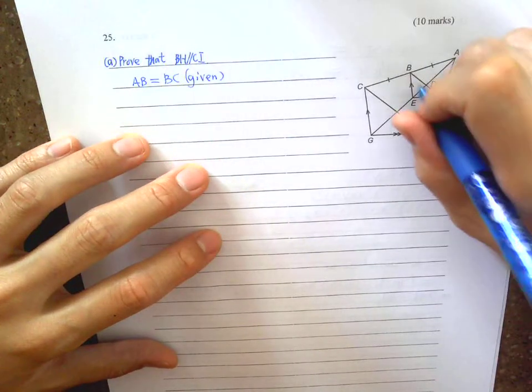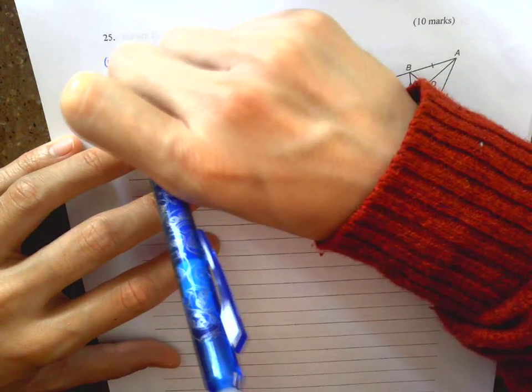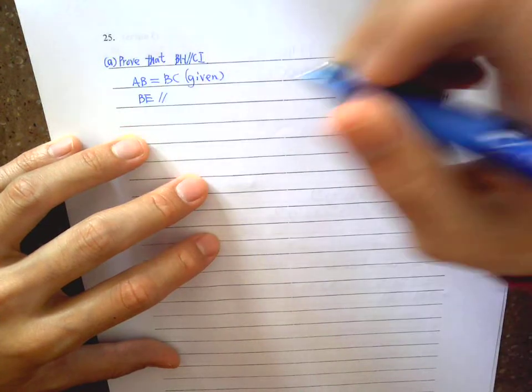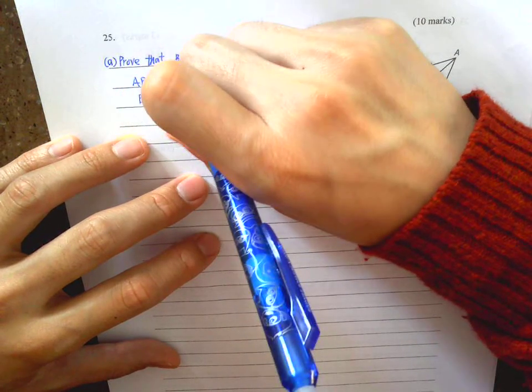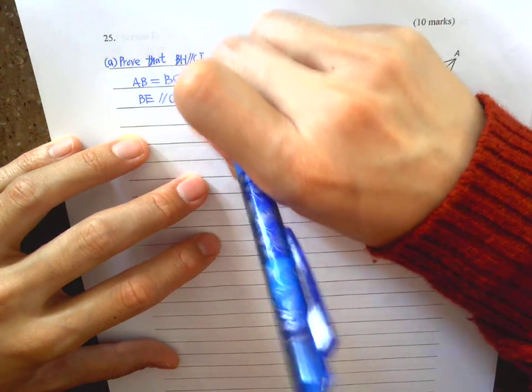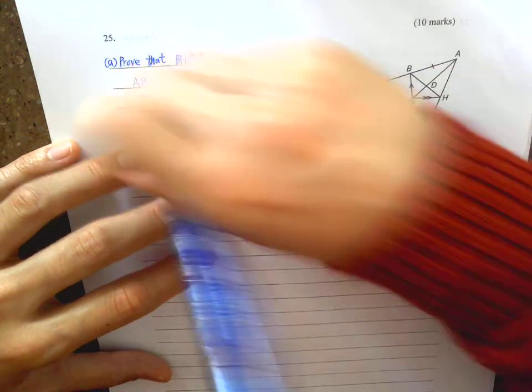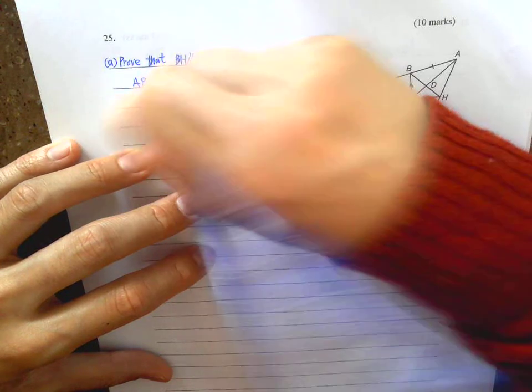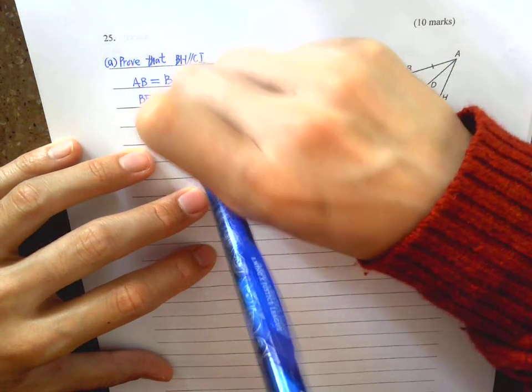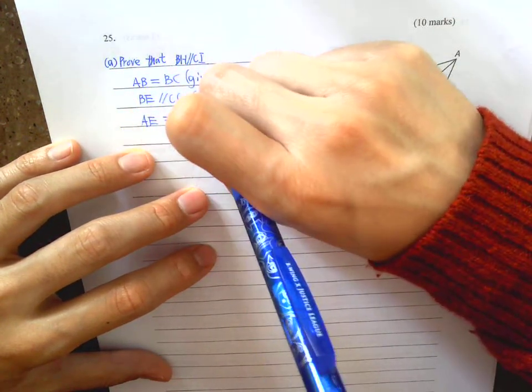Then BE parallel to CG is also given, so you can have the conclusion that AE equals EG. This one will be the intercept theorem.